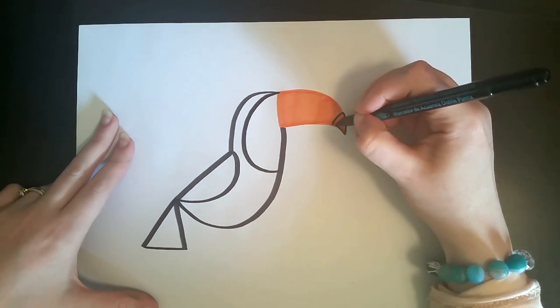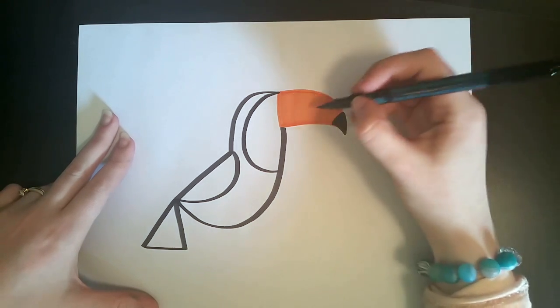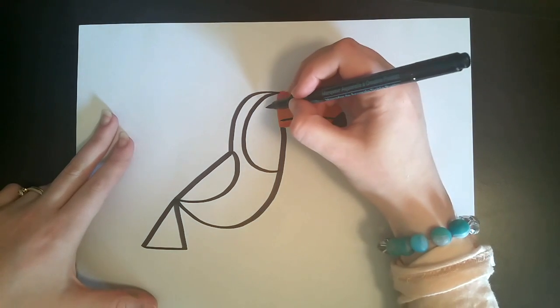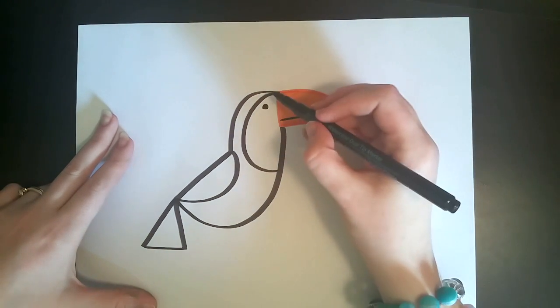And then fill in that last part of the beak, the last little triangle with black, and draw a line really low down to the beak to show where the beak connects. And then don't forget the eyeball because toucans need to see things.